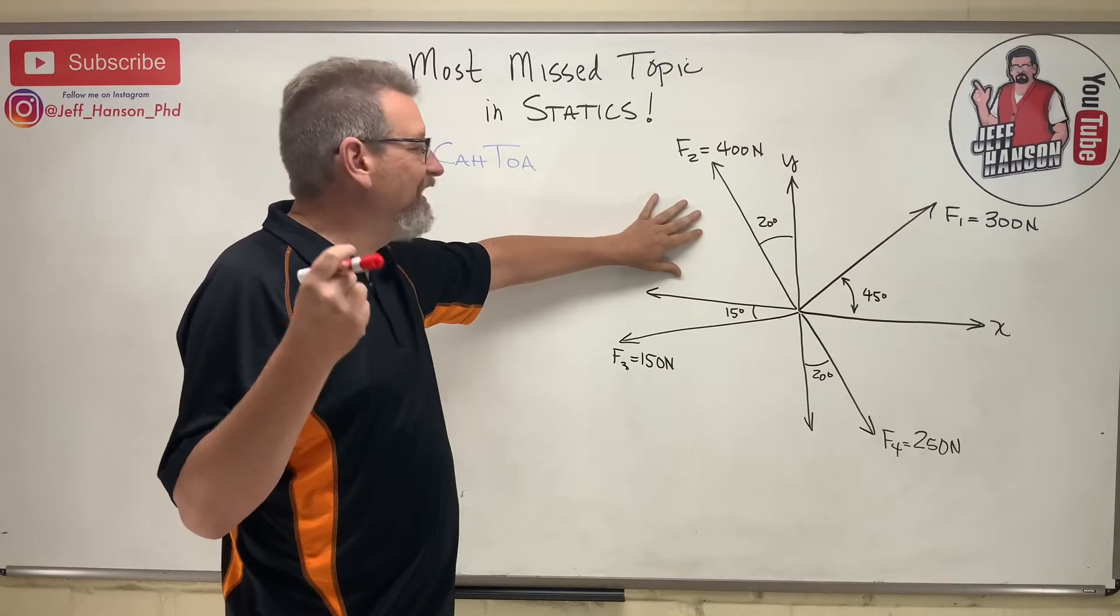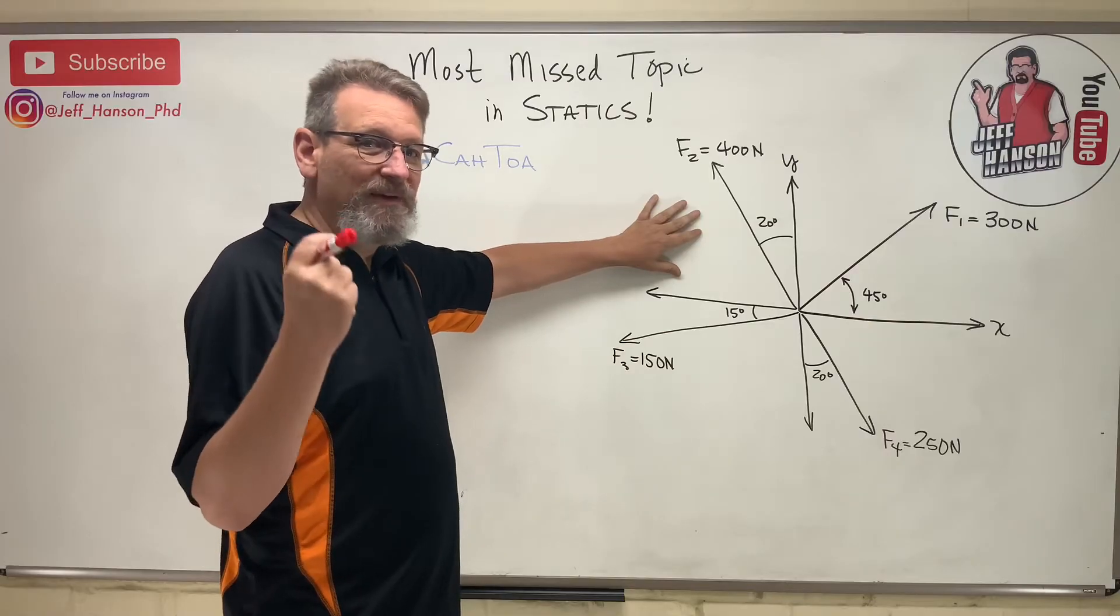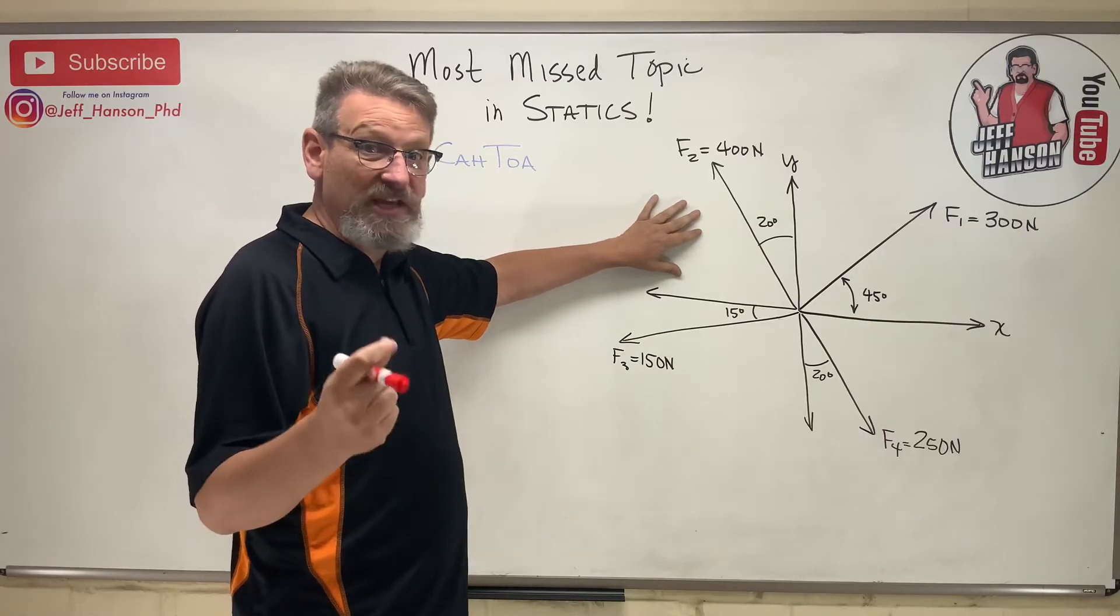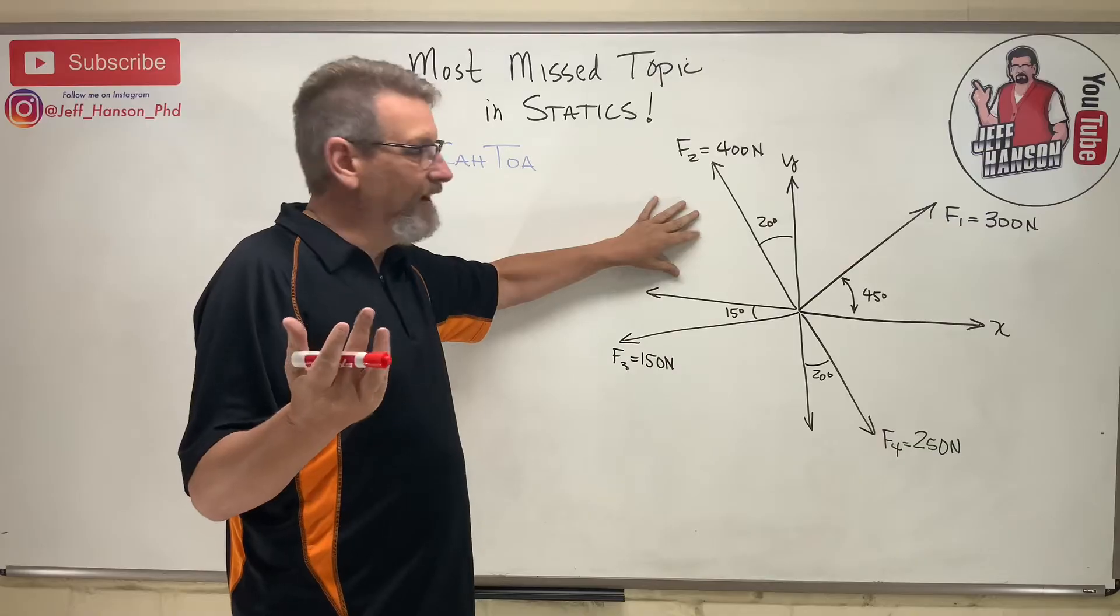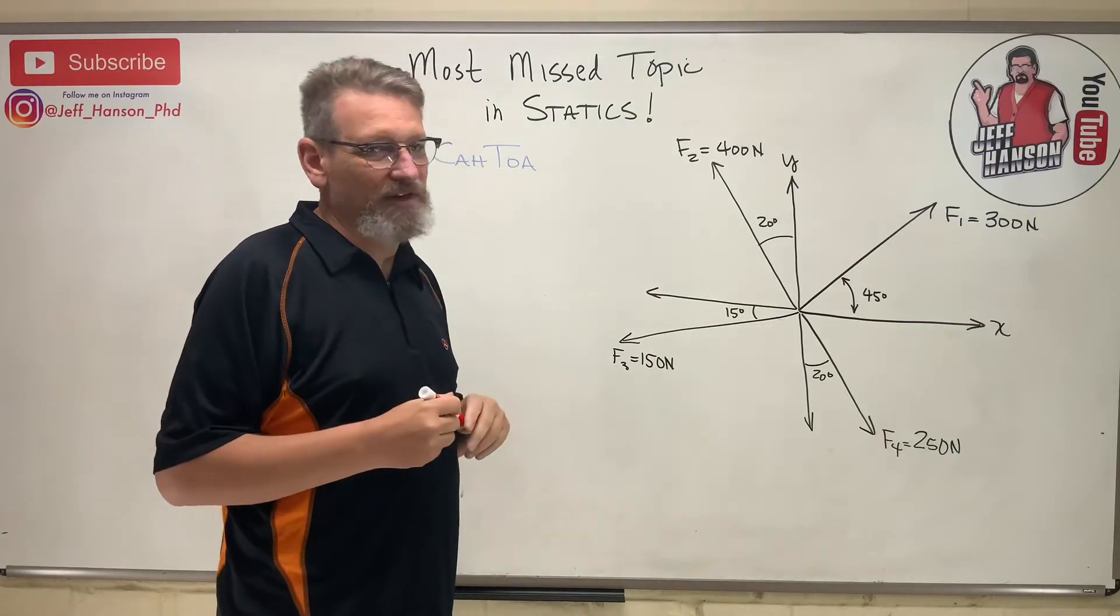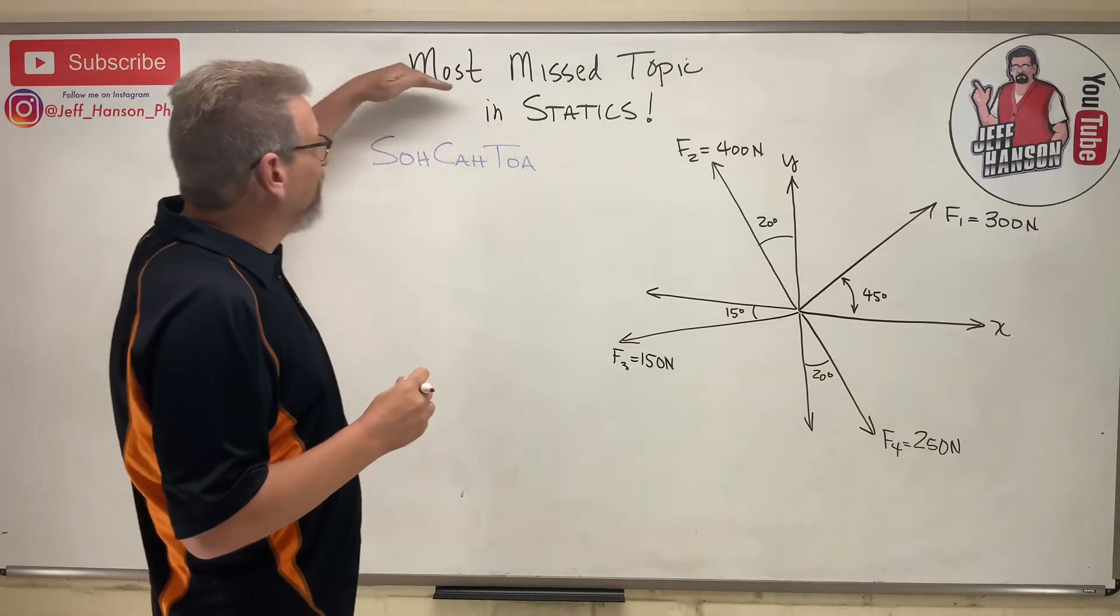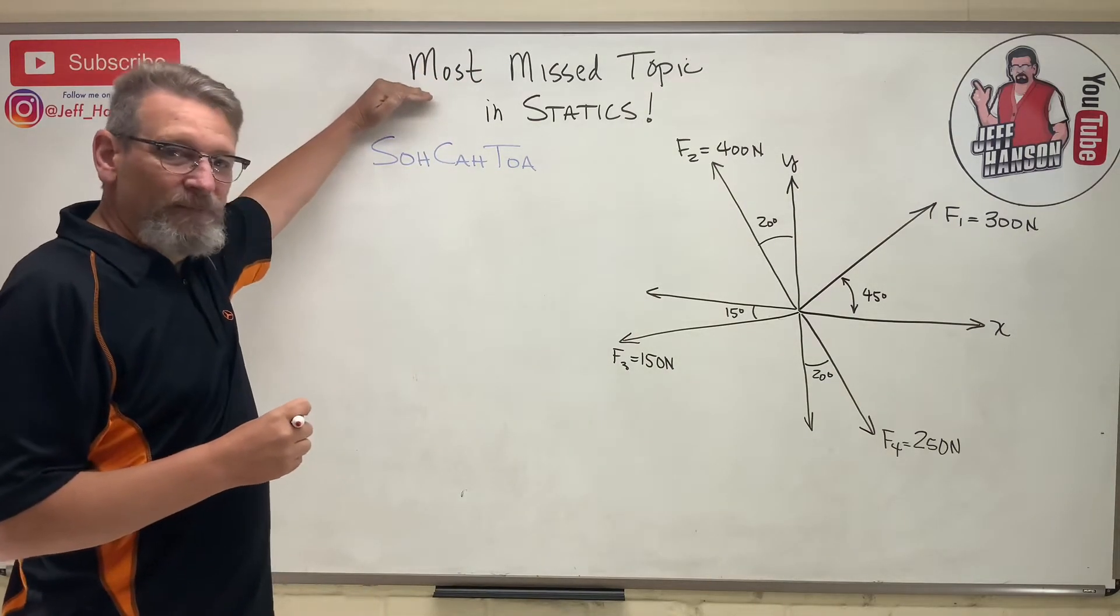And that is simply taking vectors and breaking them into two components - Cartesian components. How hard is that? I know it's easy, but students have a heck of a time doing it. And the main thing, the most missed thing, is using sine where you should have used cosine, or using cosine where you should use sine.